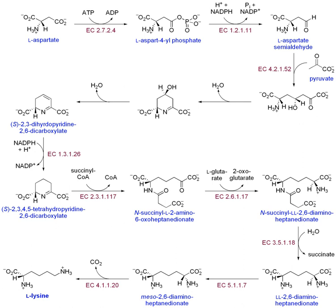Protein synthesis occurs via a process called translation. During translation, genetic material called mRNA is read by ribosomes to generate a protein polypeptide chain. This process requires transfer RNA, which serves as an adapter by binding amino acids on one end and interacting with mRNA at the other end. This pairing between tRNA and mRNA ensures that the correct amino acid is added to the chain. Protein synthesis occurs in three phases: initiation, elongation, and termination. Prokaryotic translation differs from eukaryotic translation, but this section focuses on the commonalities between the two.